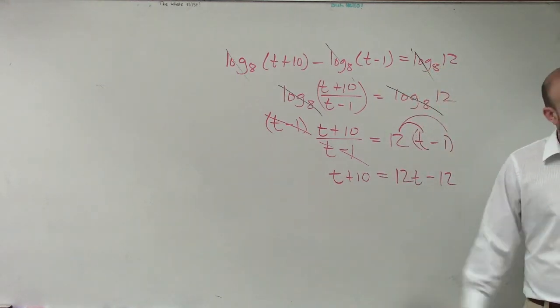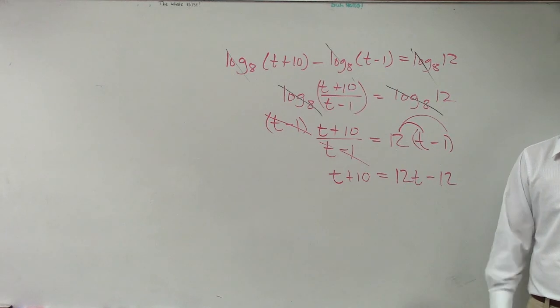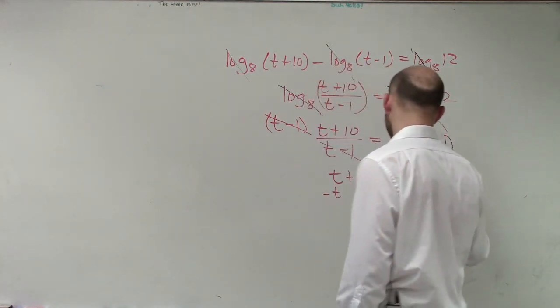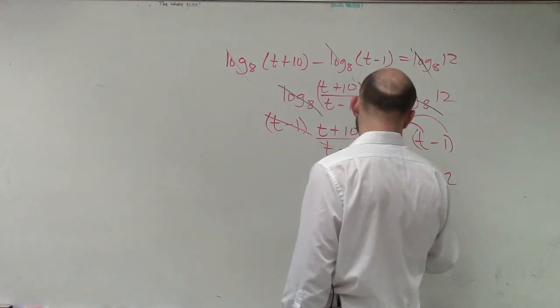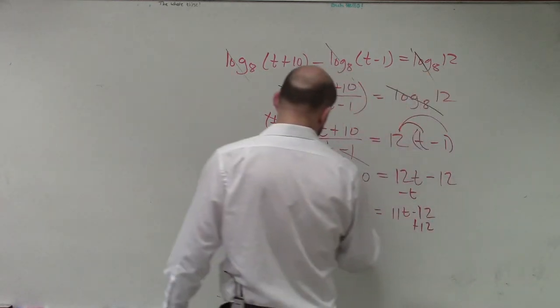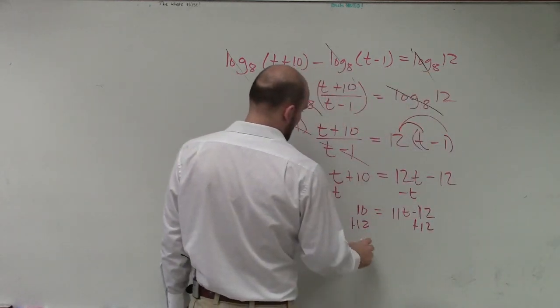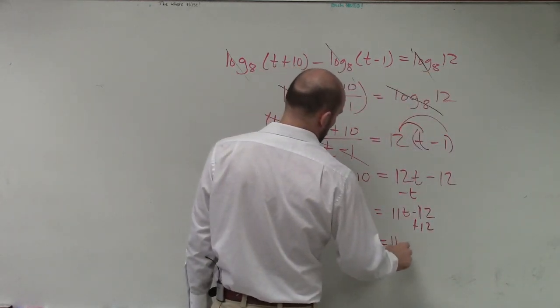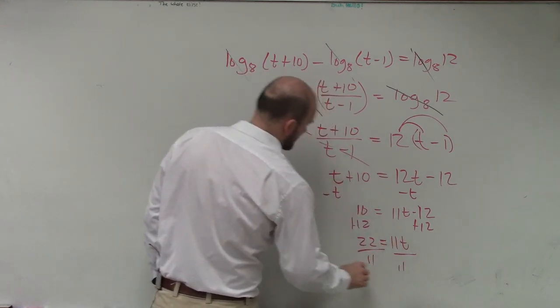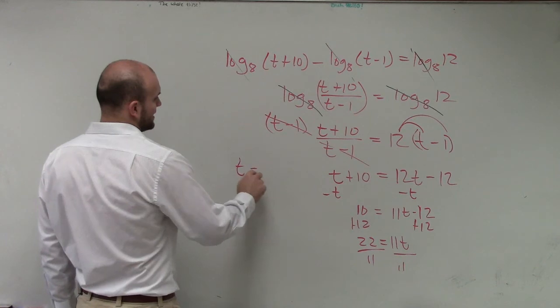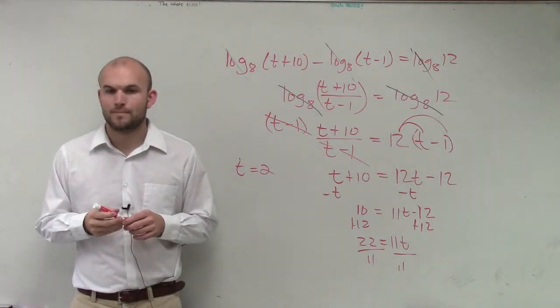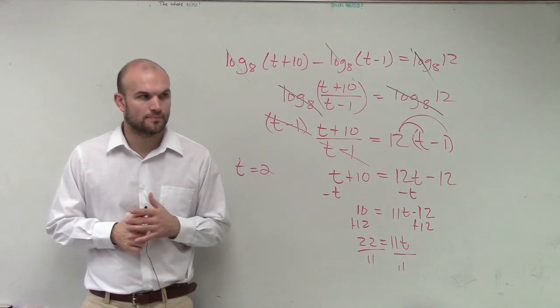Now to solve, I need to get t by itself. I'll subtract t from both sides to get the t on the same side: 10 equals 11t minus 12. Add 12 to both sides: 22 equals 11t. Divide by 11, and I get t equals 2. Cool? Awesome.